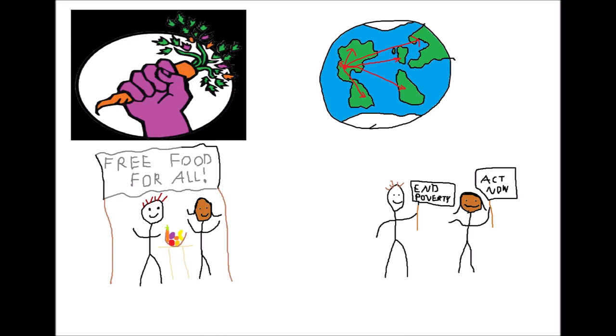Food Not Bombs groups use consensus to make decisions, ensuring that every member is comfortable with every decision, and they operate via solidarity, not charity, meaning that they feed everyone, not just those that they pity or that they deem worthy of help. And they work actively to empower those that they help, encouraging them to help with the group and working actively to oppose the systems that oppress them.